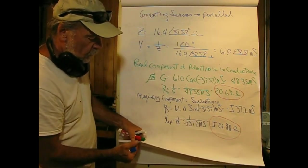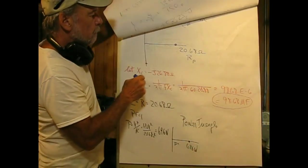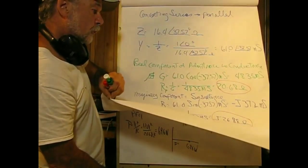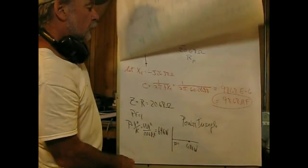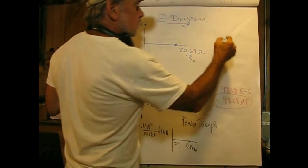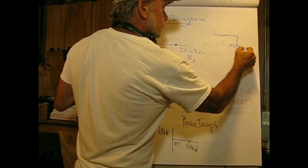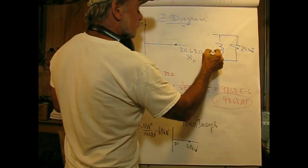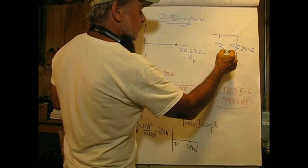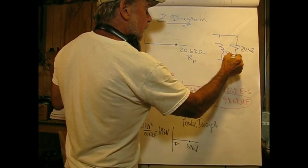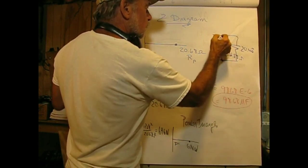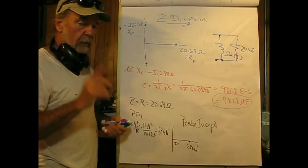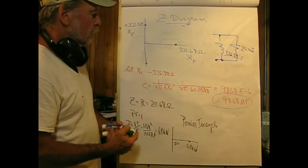Now we're in position to redraw the circuit. Let me redraw the circuit: 20.68 ohms and this guy is J 26.88 ohms. So that's our parallel equivalent circuit. This is only equivalent at one frequency, and that's 60 hertz. Just thought I'd mention that.